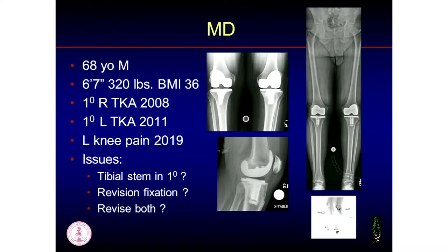Something I think about a lot is how to handle the revision to mitigate the risk of this happening a second time — this is where the cones come into play. The cones were made to fill bone defects, but they're an area of osteointegration. If it ingrows, it shouldn't loosen again. So I think a cone would be indicated here not for bone loss, but to get biologic fixation, and then I'd use a considerably longer stem to protect the cone.